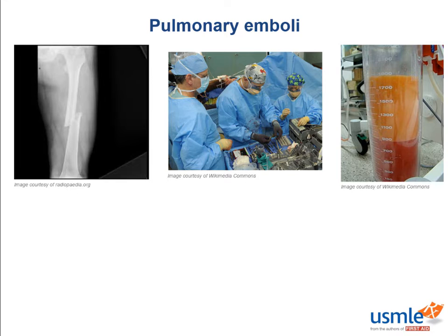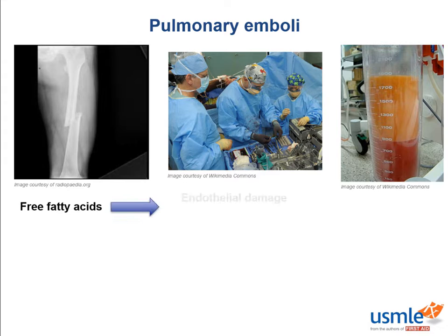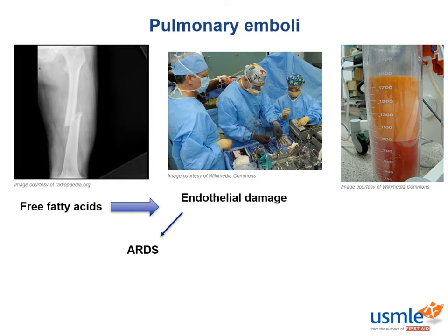In these scenarios, small fat particles leak into the venous system. Fat is then hydrolyzed by lipoprotein lipase, and free fatty acids are released into the circulation. Despite their name, these fatty acids aren't supposed to be free in the circulation, and as a result they damage the endothelium. When it's the endothelium of the lungs that's damaged, patients develop acute respiratory distress syndrome, or ARDS, presenting with dyspnea and hypoxemia.